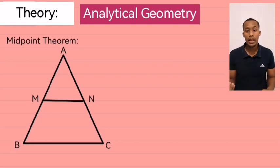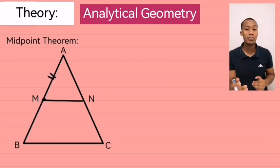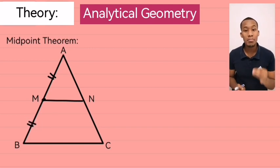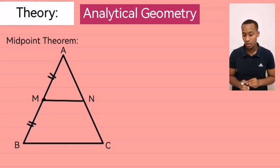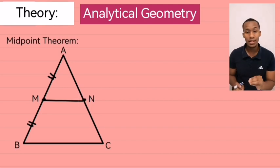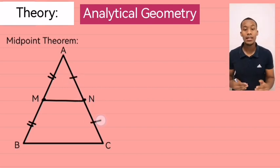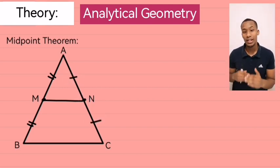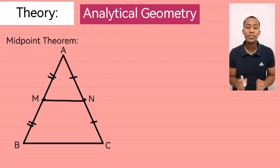In triangle ABC, we have M on line AB and M is the midpoint of AB. Also, you have point N on line AC and N is the midpoint of AC. Now, if those two midpoints are joined by a line, as shown in the triangle in front of us...